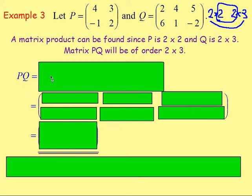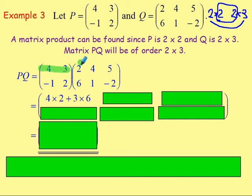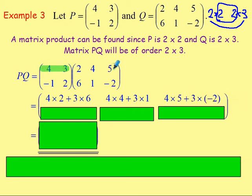So we write down matrix P [4, 3; -1, 2] beside matrix Q [2, 4, 5; 6, 1, -2] and we can multiply them. The result has 2 rows and 3 columns. For the entry in the first row and first column: 4 times 2, add 3 times 6. For the entry in the first row and second column: 4 times 4, add 3 times 1. For the entry in the first row and third column: 4 times 5, add 3 times (-2).